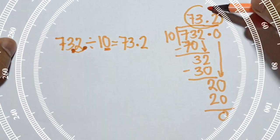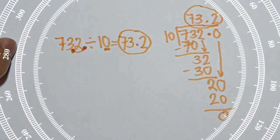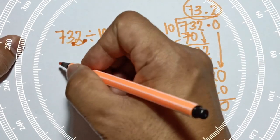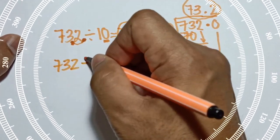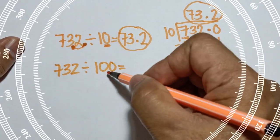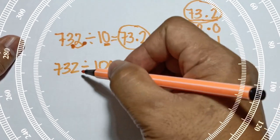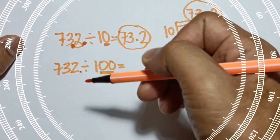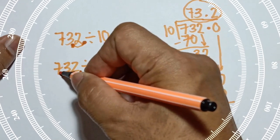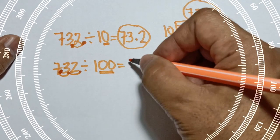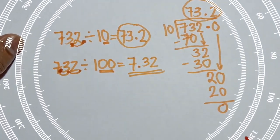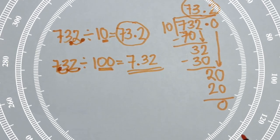So 732 divided by 10 gives 73.2. Another example: 732 divided by 100. In 100 you have two zeros, and the decimal point of 732 is at the right side of the last digit, so you move it two times to the left — one, two — and your answer becomes 7.32.